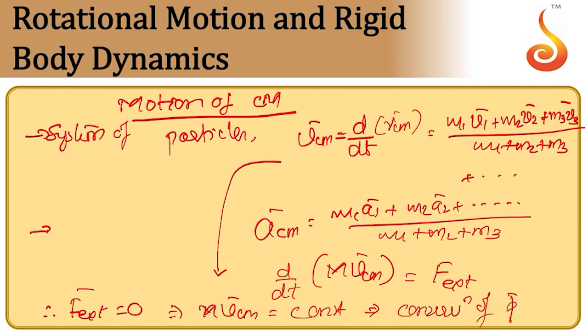Looking at this equation, d/dt of (M·v_cm) is nothing but the external force. So if external force is zero, then M·v_cm equals constant — that is the law of conservation of momentum. For a system of particles, the velocity of the center of mass is unaffected by internal forces. If the external force is zero, the center of mass remains fixed.